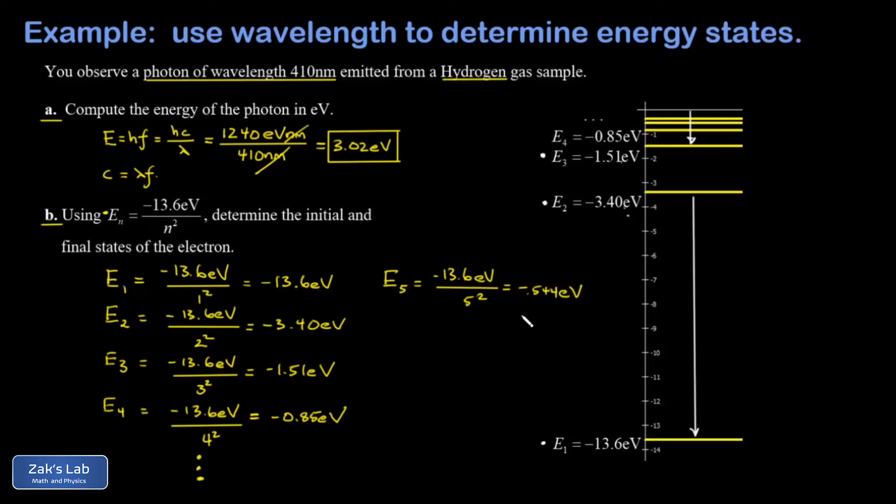So the n equals five energy state is negative 0.544 eV. If we look at the difference between this and the n equals two state, this gives me an energy transition of about 2.86 eV. So that's not going to do it.